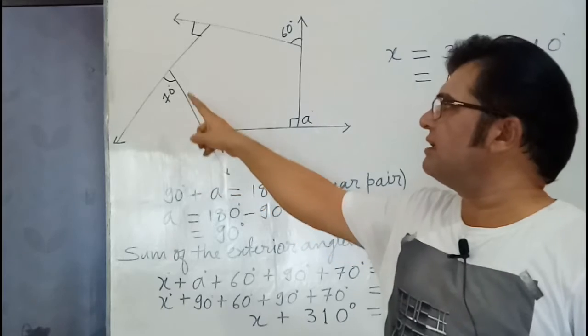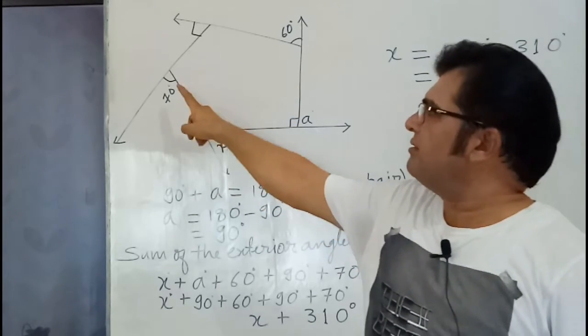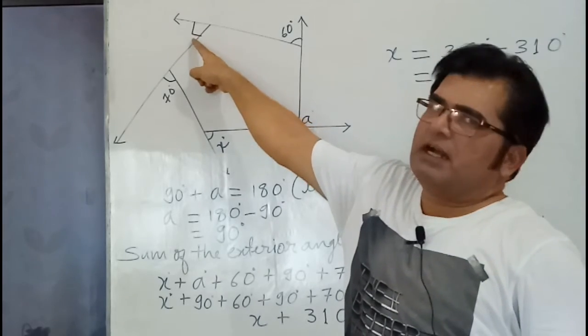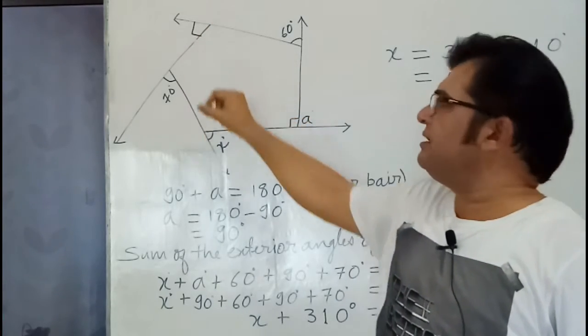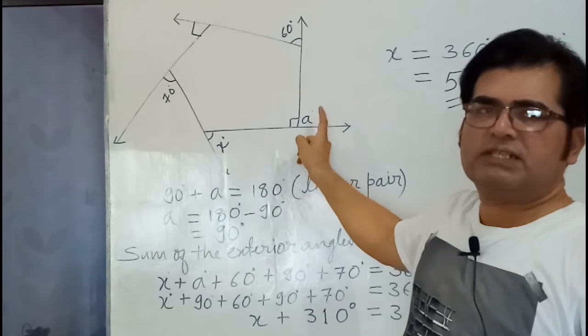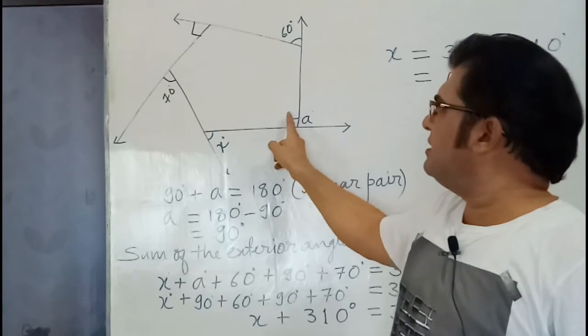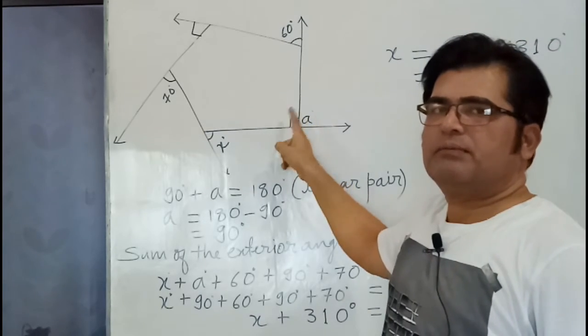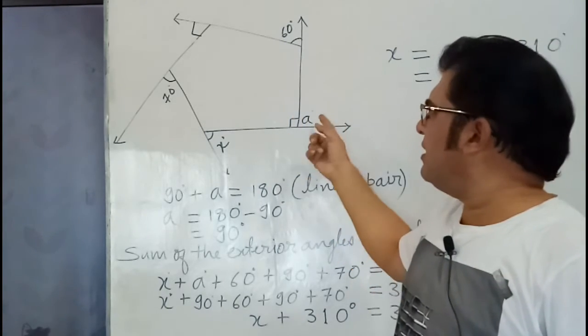The rest of the values are given: one value is 70, another is 60, another is 90. This symbol represents 90 degrees, but here the interior angle is given as 90. So with the help of the interior angle, we will find the exterior angle by linear pair. Here I have used letter A.